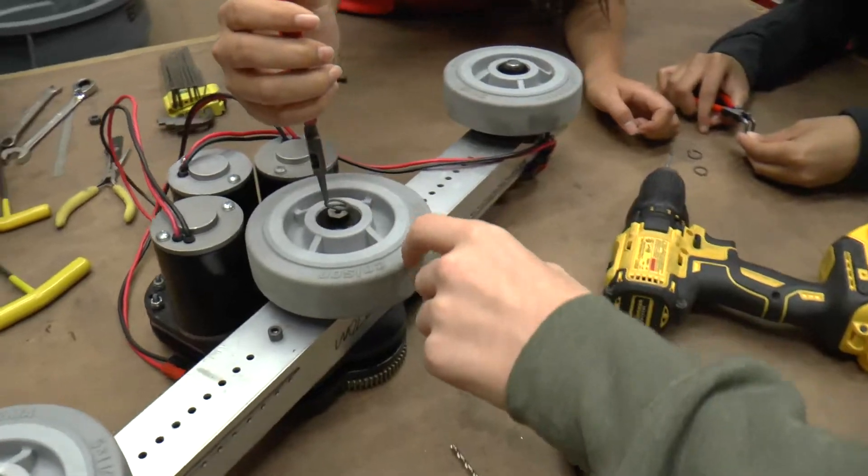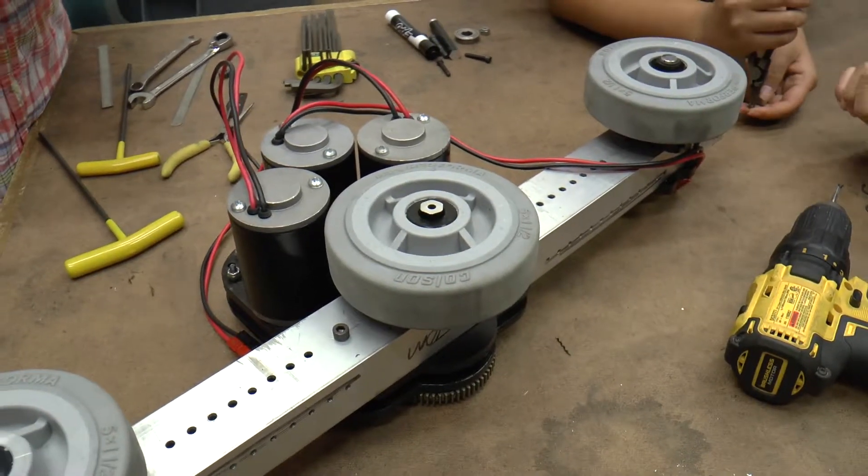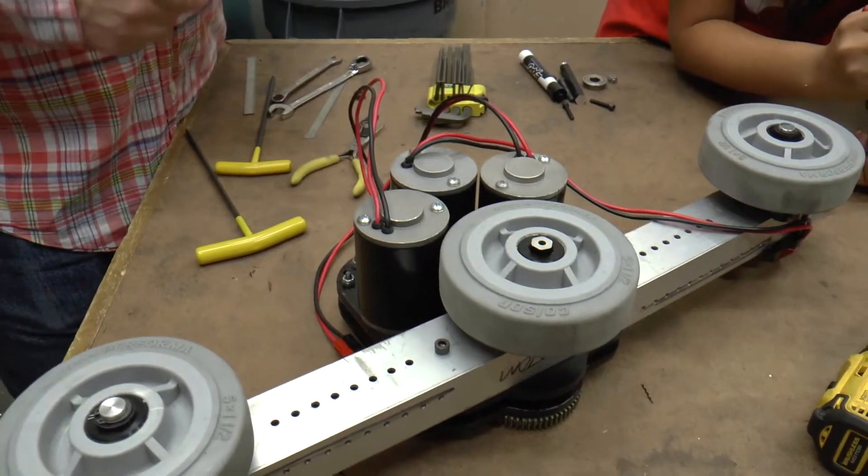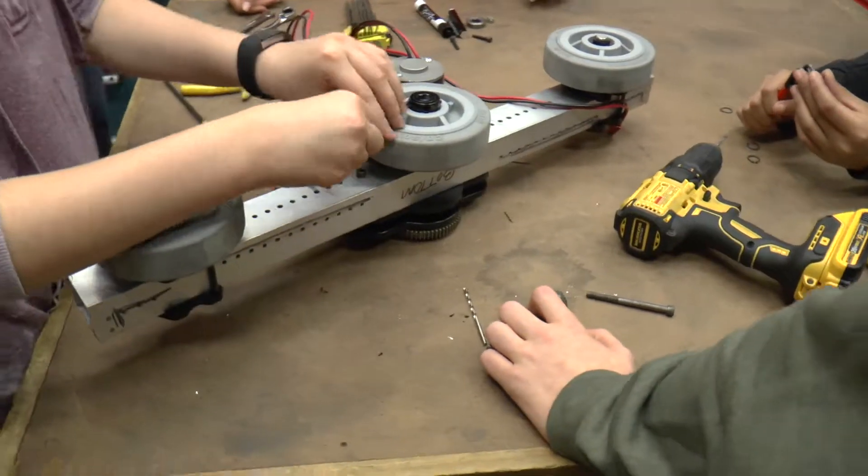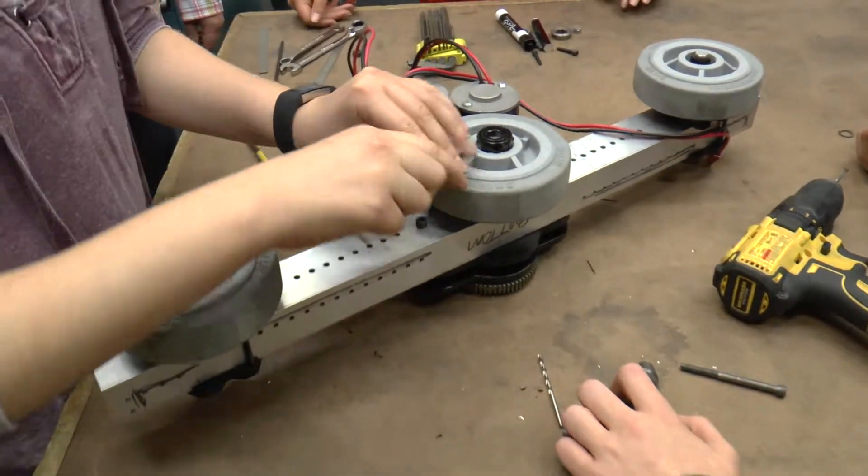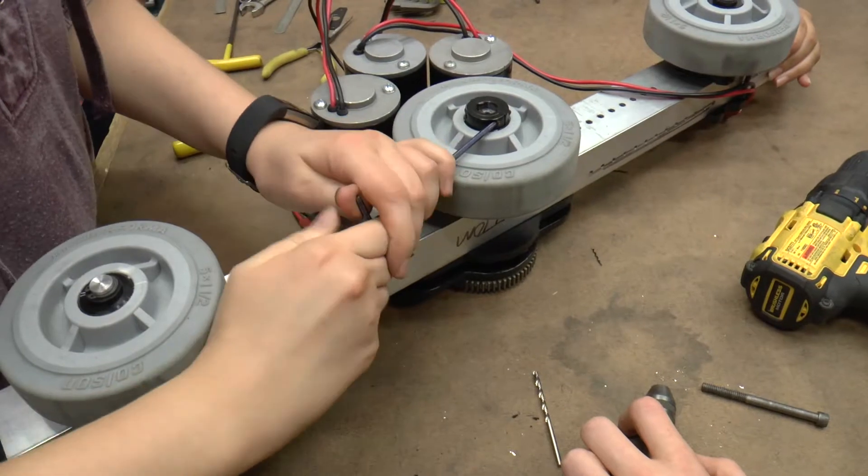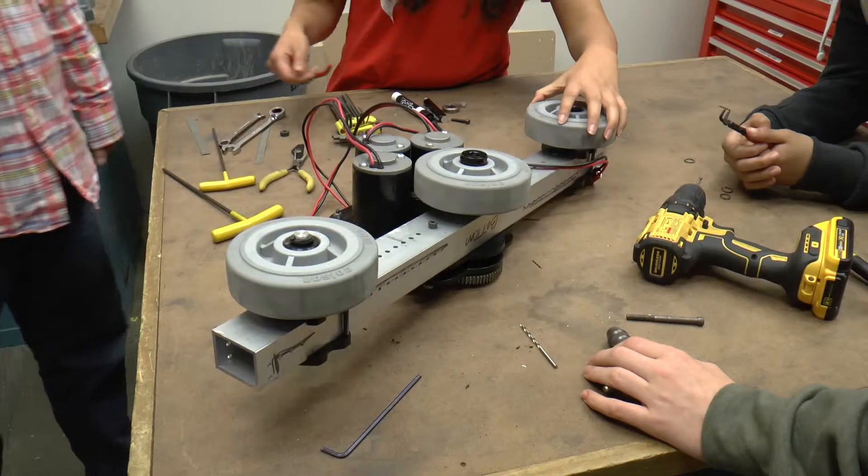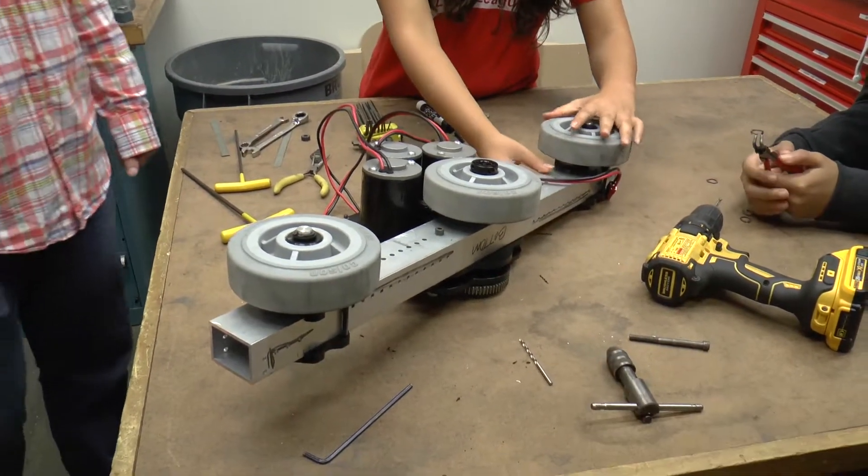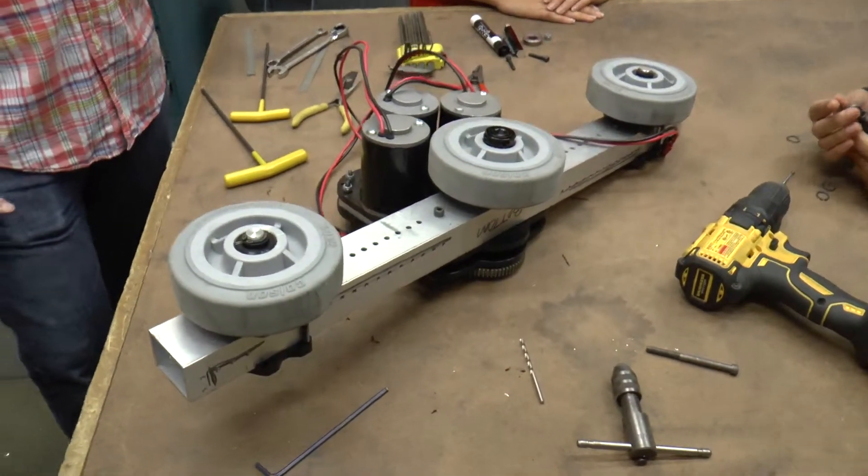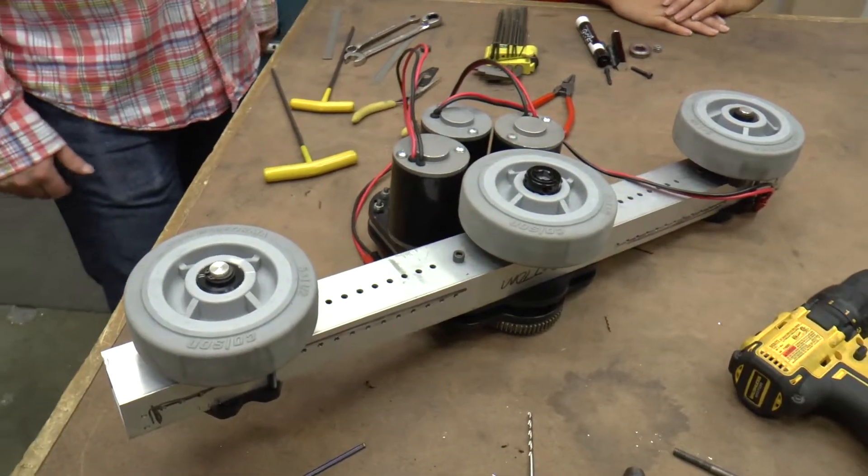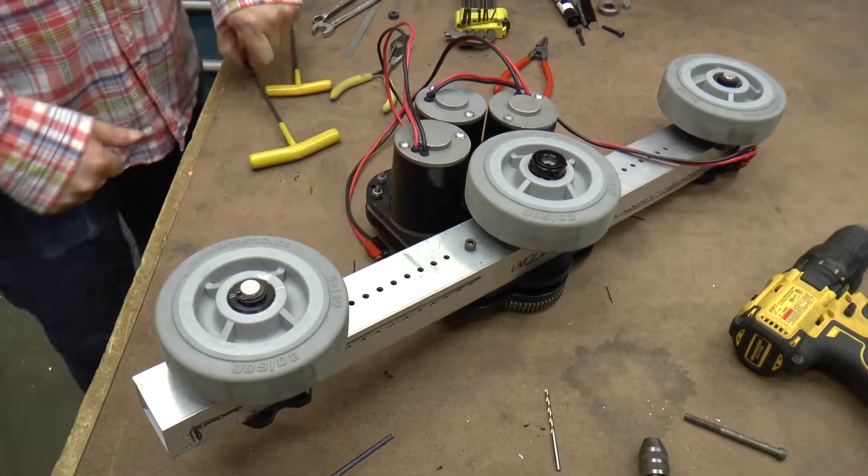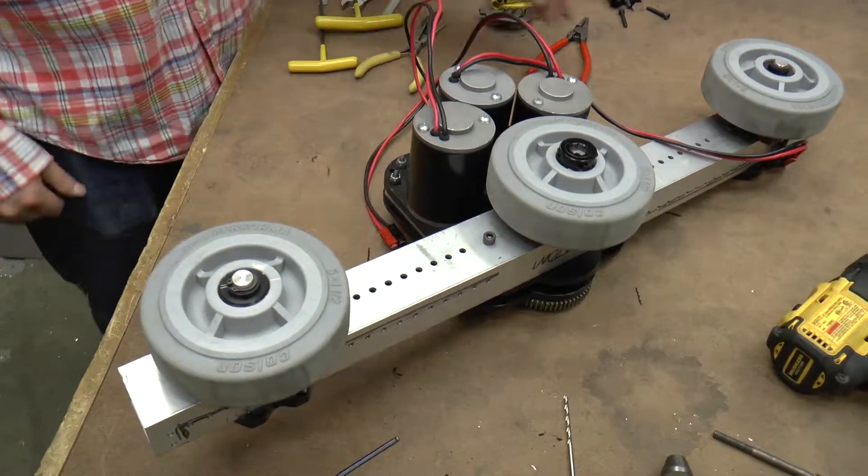And then normally we would put a snap ring groove on there. But since this is our very last thing and we don't want to take the time, we're just going to put a shaft collar on. And that is the finished drive rail. So now during build season, we're going to do four of those in about a week. I'm supposed to have one of them in three months. That's true. Awesome.